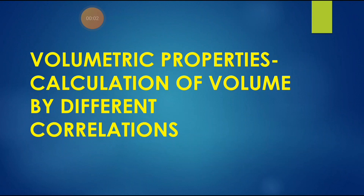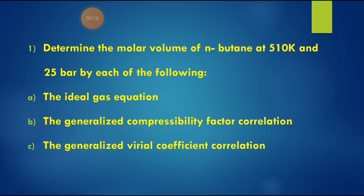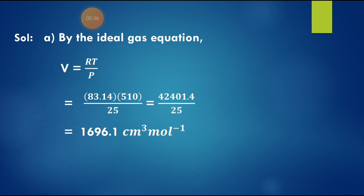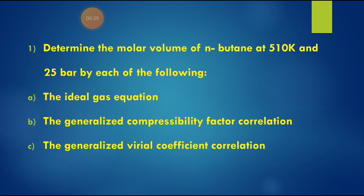Today's topic is volumetric properties — calculation of volume by different correlations. We'll determine the molar volume of n-butane at 510 Kelvin and 25 bar using each of the following: the ideal gas equation, the generalized compressibility factor correlation, and the generalized virial coefficient correlation.